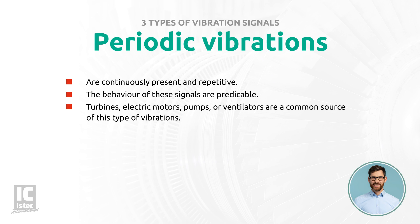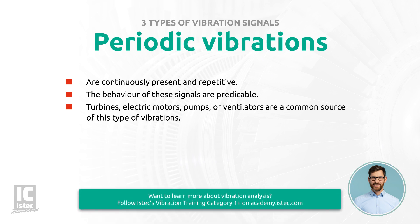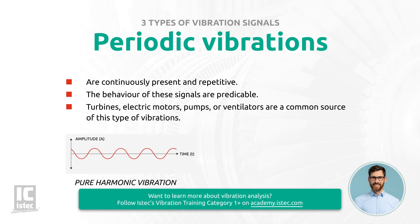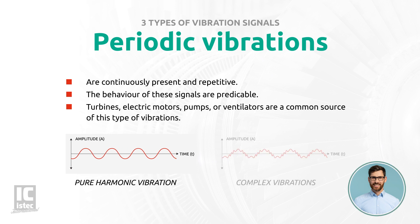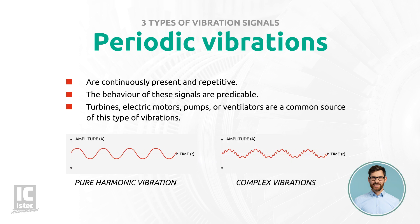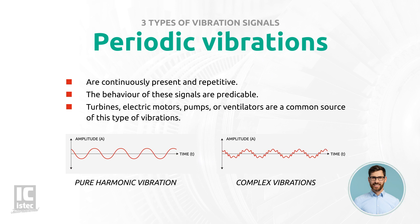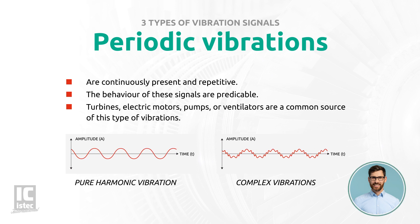These vibrations can be represented by a mathematical equation quite easily. The most basic form of a periodic vibration is the pure harmonic or single continuous vibration, characterized by a sinusoidal waveform. However, rotating machines are characterized by multiple periodic vibrations, and even though these are periodic, these complex vibrations are not always pure harmonic.